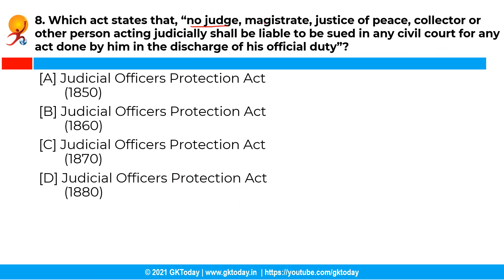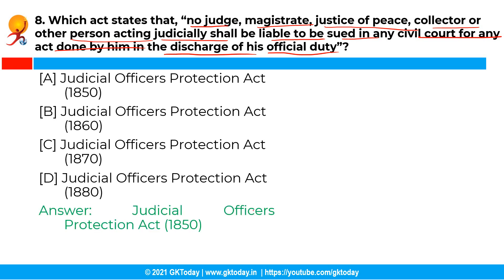The next question is: which act states that no judge, magistrate, justice of peace, collector or other person acting judicially shall be liable to be sued in any civil court for any act done by him in the discharge of his official duty? The correct answer is option A, the Judicial Officers Protection Act of 1850. This act states that no judge, magistrate, justice of peace, collector or other person acting judicially shall be liable to be sued in any civil court for any act done in the discharge of official duty.